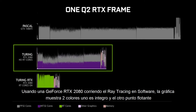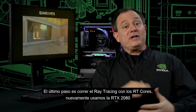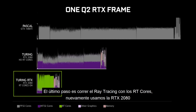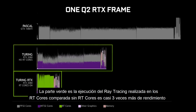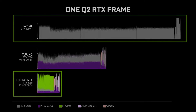The graph shows two different colors — integer and floating point — to show the benefit of simultaneous integer and floating point execution. The final step is to run ray tracing on the RT cores. Using the same RTX 2080, the green you see here is the ray tracing execution being done on the RT cores. Comparing that to an RTX 2080 without RT cores, it's about three times the performance, and comparing to a Pascal GTX 1080 Ti, it's about six times the performance.